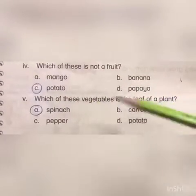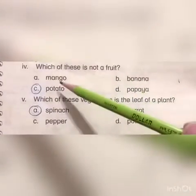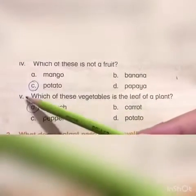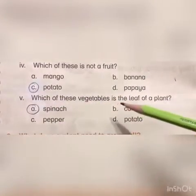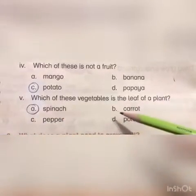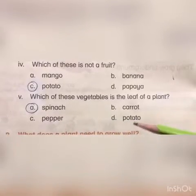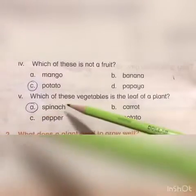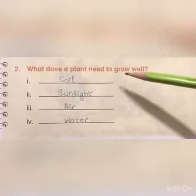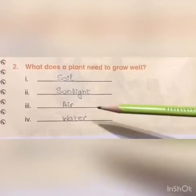Number four: which of these is not a fruit? A) mango, B) banana, C) potato, D) papaya. The correct answer is C) potato. Mango, banana, and papaya are fruits. Number five: which of these vegetables is the leaf of a plant? A) spinach, B) carrot, C) pepper, D) potato. The correct answer is A) spinach. Question number two: what does a plant need to grow well?